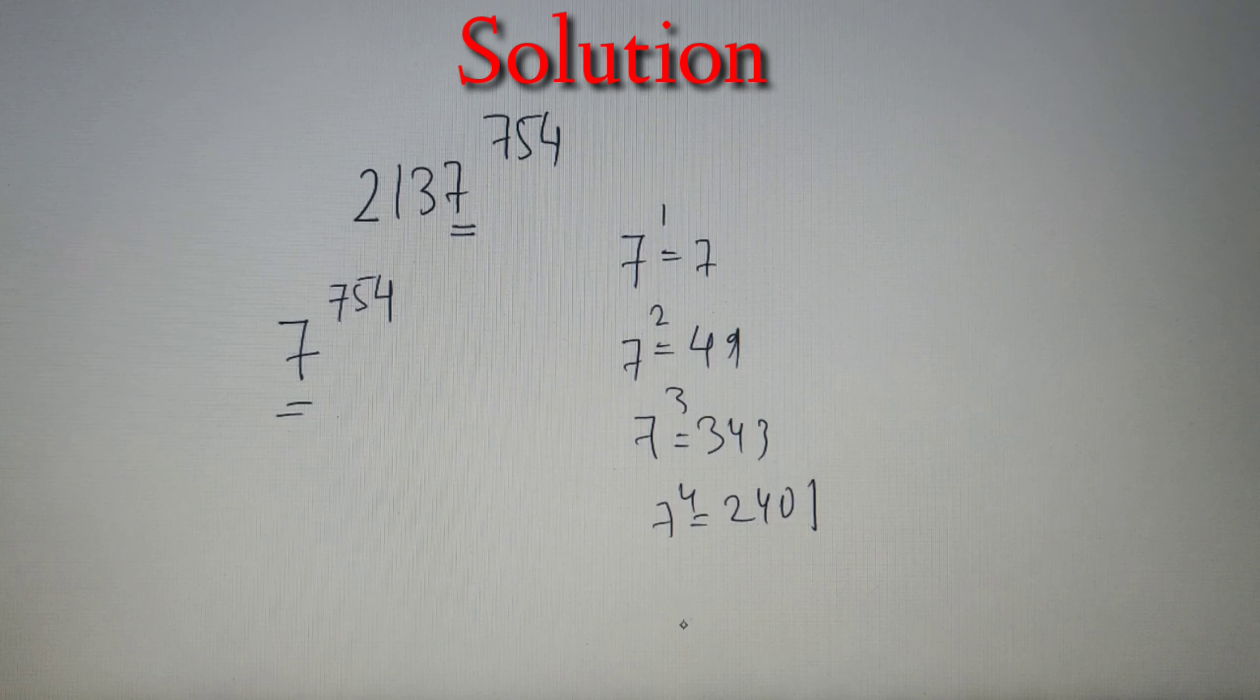And you will see that after 7 raised to the power 5 the last digit will start repeating as 7, 9, 3 and 1. So the cyclicity of 7 is equal to 4.